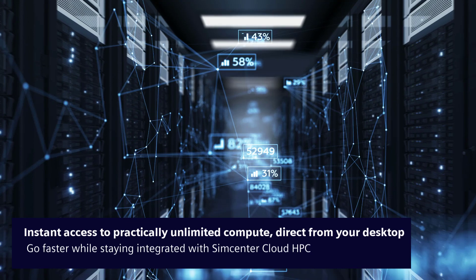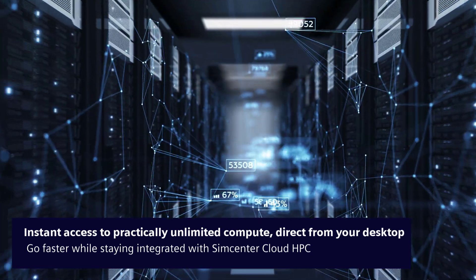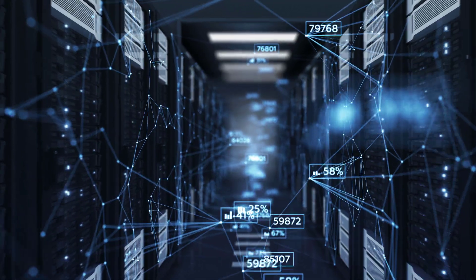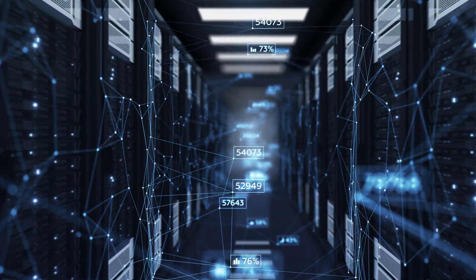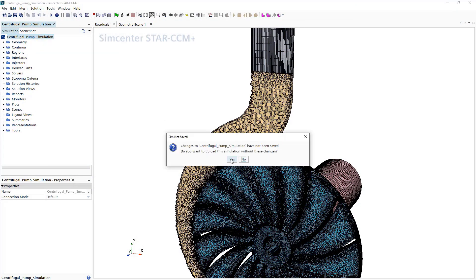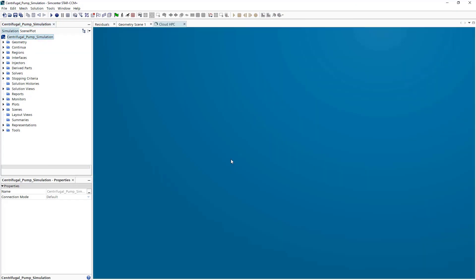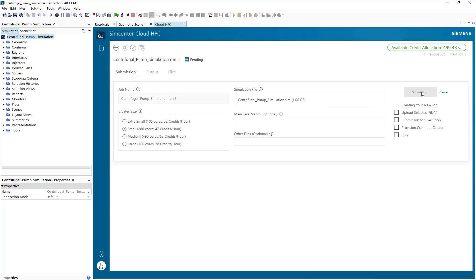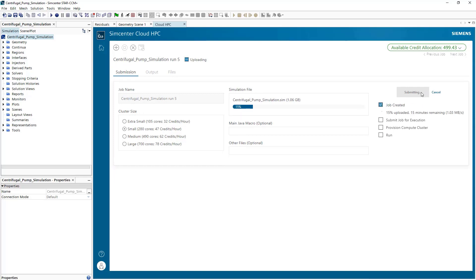Running CFD simulations on the cloud offers increased flexibility and scalability over on-premise hardware with on-demand access and unlimited capacity. Directly from within Simcenter STAR-CCM+ 2210, Simcenter Cloud HPC now gives you instant access to optimized Amazon Web Services infrastructure, configured and managed by Siemens, with no additional setup needed.